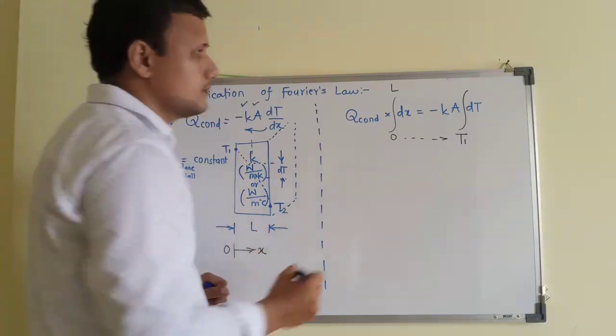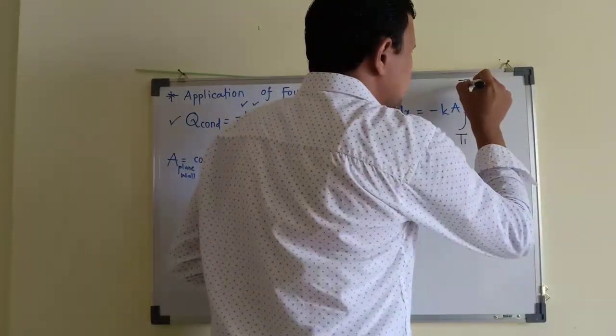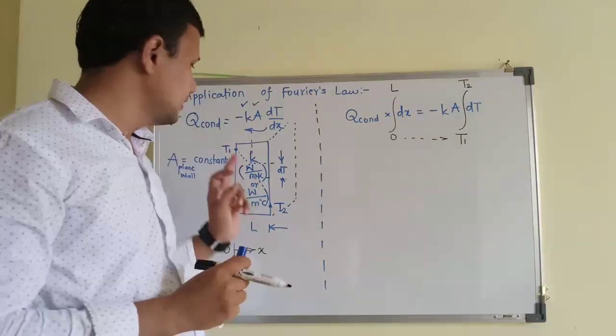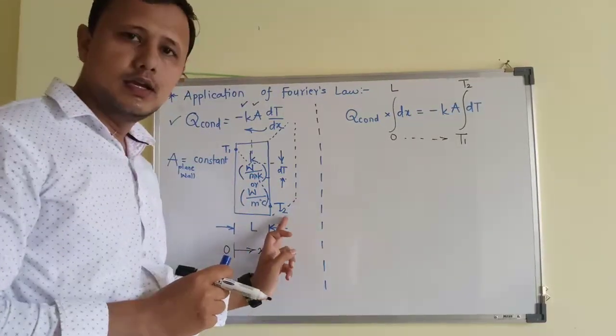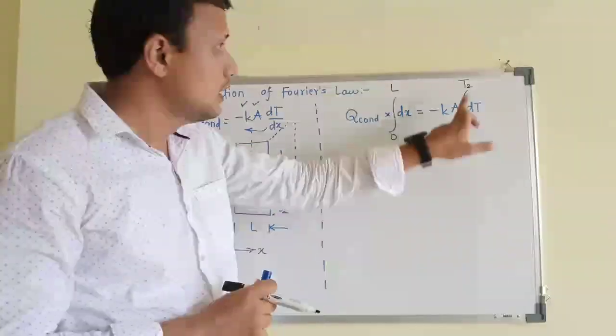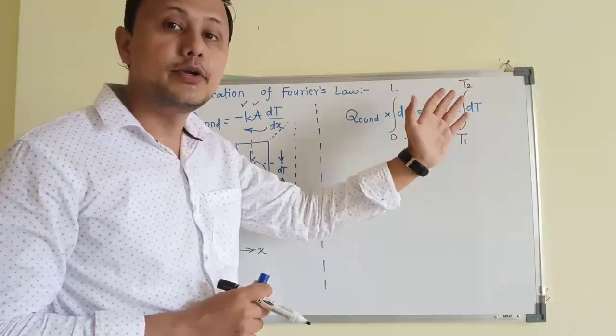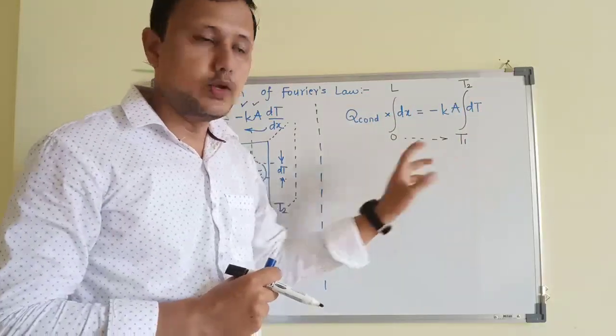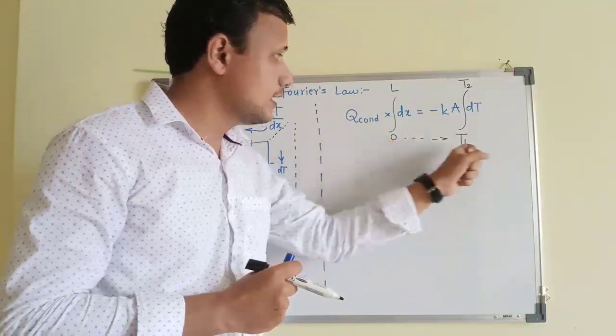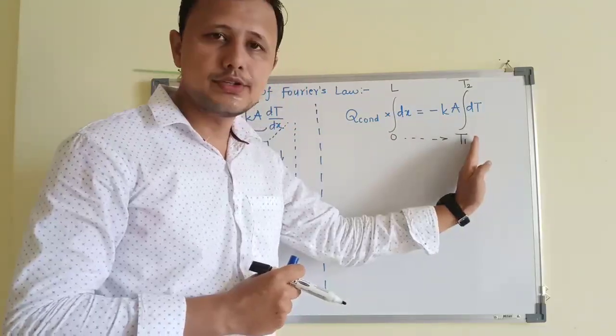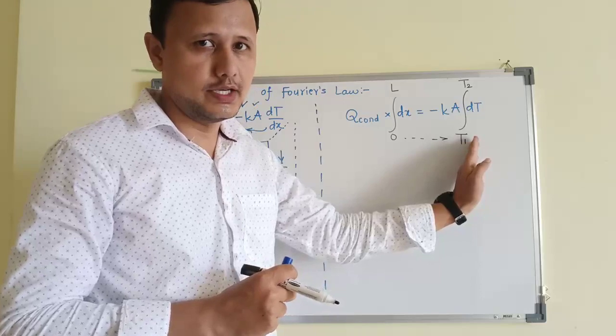At x is equal to L, the temperature is T2. Now the question will come that in the beginning I said T1 is higher, T2 is lower. But then higher temperature is the lower limit of integration and lower temperature is the higher limit of integration. Their values do not matter at this point. We are concerned about the physical understanding of the location. At that particular location that will be the temperature and that is why it will be the limit of integration.